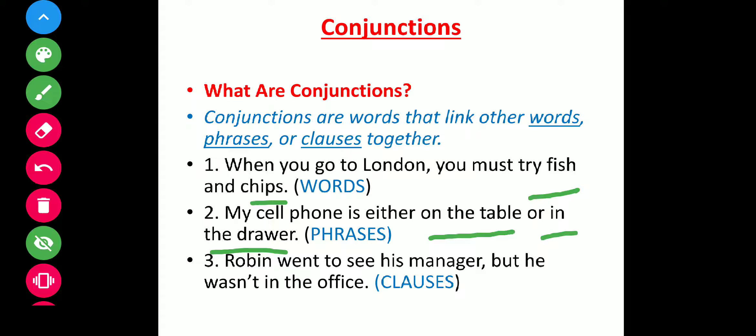'Robin went to see his manager, but he wasn't in the office.' In this third case, 'but' is the conjunction. In the second case the conjunction was 'or', and in the first case it was 'and.'